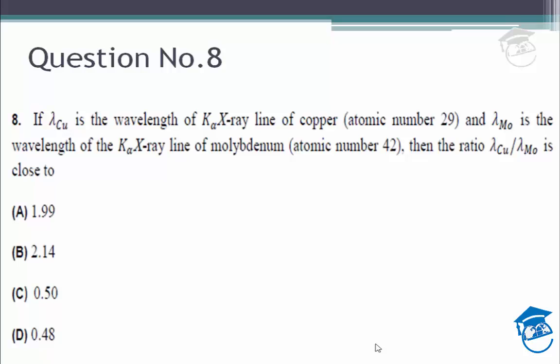Question 8. Lambda Cu is the wavelength of the K-alpha X-ray line of copper and Lambda Mo is the K-alpha line of molybdenum.